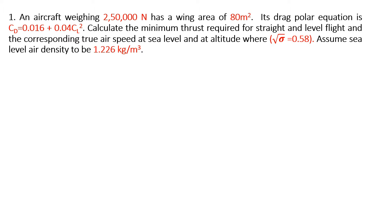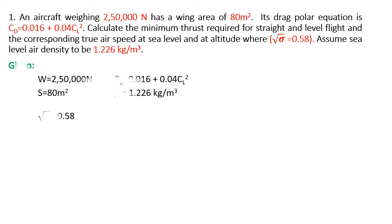Based on the question, let us first list out the conditions. The aircraft weight W is 250,000 Newton, wing area S equals 80 meter square, the drag polar equation is given, and the density of air at sea level and square root of Sigma is given. In this problem we have to find the minimum thrust and true airspeed at two conditions: at sea level and at altitude.